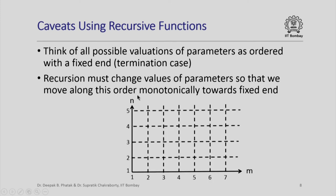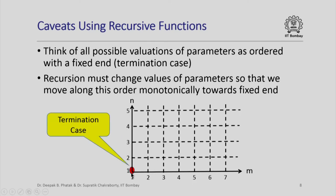In the context of our example, we had two parameters m and n which took values between 1 and 10. We can represent the different combinations of values as points in a grid — not all values up to 10 are shown for clarity. The grid point (1, 1) constitutes the termination case. Let us say we are trying to compute encode(4, 3), so we are at that point of the grid.